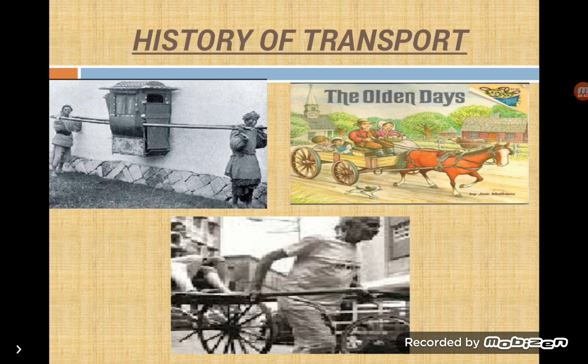Carts drawn by oxen or horses were made to carry more people and goods. People used hollow wooden logs to travel across rivers. Later, they made boats to sail on waters. Slowly, the invention of railway and steam engine changed the way people and goods were transported from one place to another.